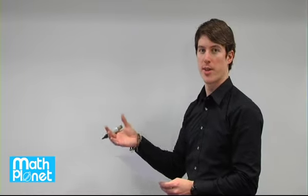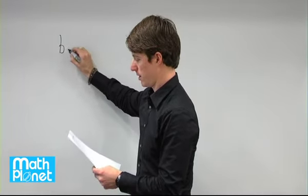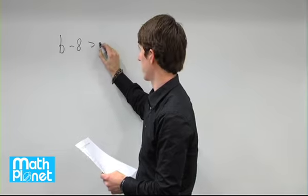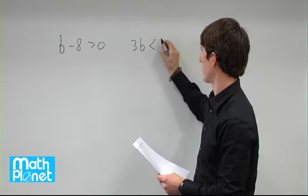We're given two inequalities here and that will give us a range for the value of b and then we can figure out what it is based on that. We have b minus 8 is greater than 0 and we have 3b is less than 36.